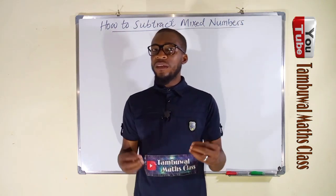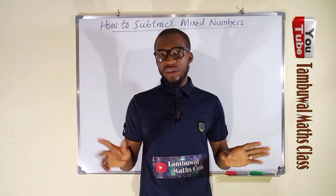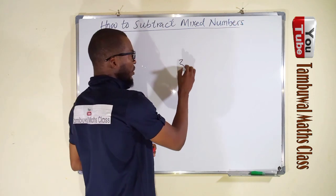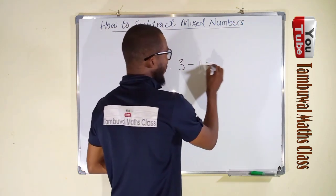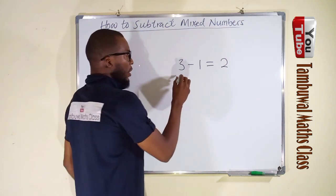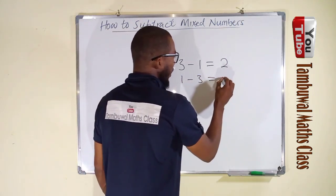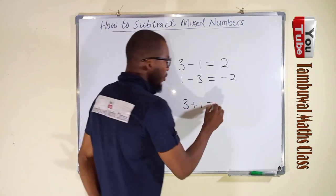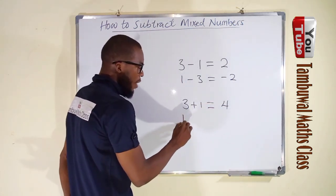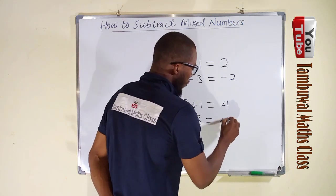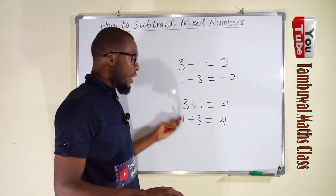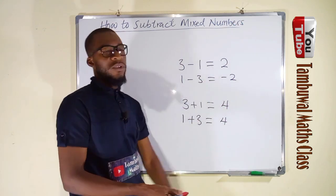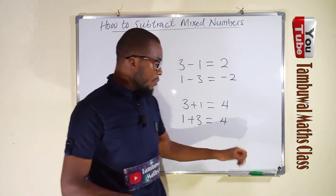Before we start, I want you to know that addition is commutative while subtraction is not. For example, 3 minus 1 gives us 2, but 1 minus 3 gives a negative result. Unlike addition — 3 plus 1 and 1 plus 3 both give 4 — you can interchange the values and still get the same result. That is why addition is commutative but subtraction is not.